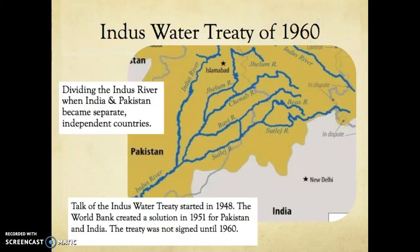There were provisions in this treaty that allowed India to make some run-of-the-river projects as long as they met certain requirements in the treaty. The idea for the treaty started in 1948, and they couldn't come to a solution on how to divide up the rivers. So the World Bank sent a neutral party to create a solution in 1951; however, the treaty was not signed and agreed upon until 1960.